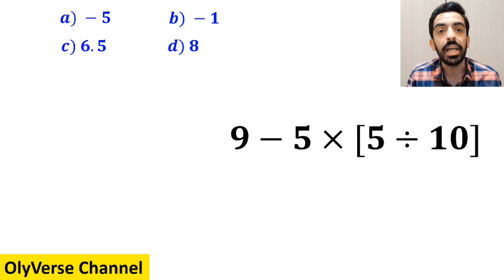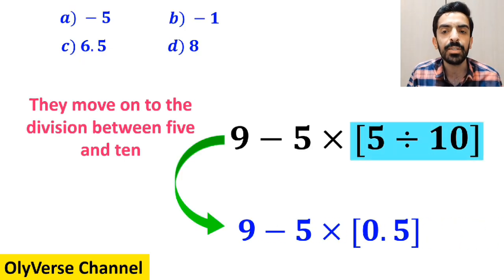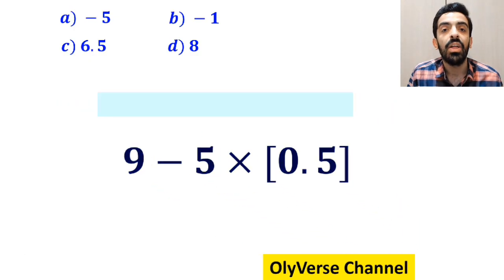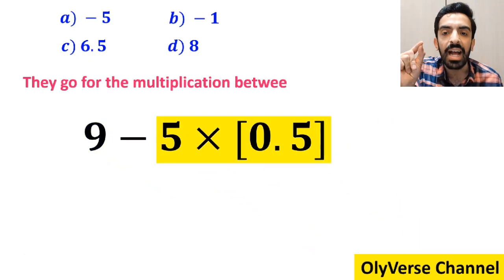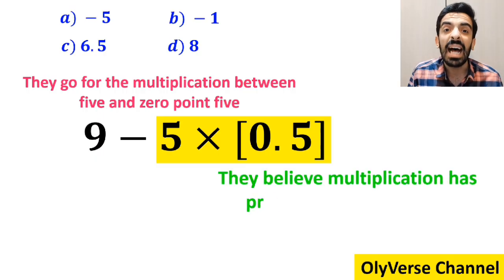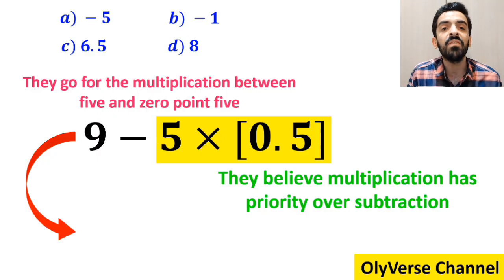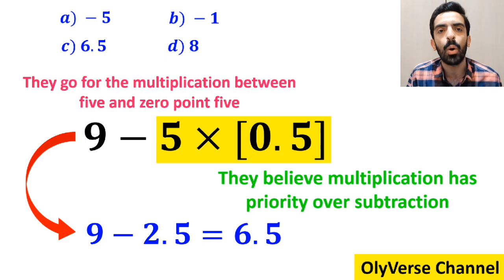And the next step, they move on to the division between 5 and 10, which simplifies this expression to 9 minus 5 times 0.5. Then, they go for the multiplication between 5 and 0.5, because they believe multiplication has priority over subtraction. So, instead of this expression, they write 9 minus 2.5, which finally gives them the answer 6.5.